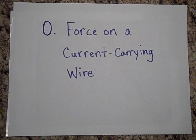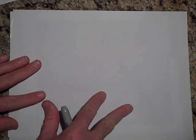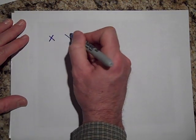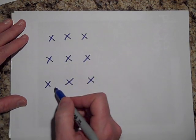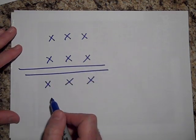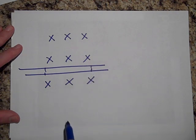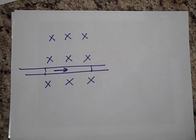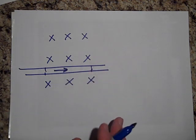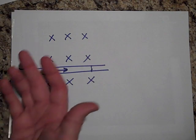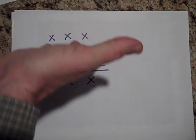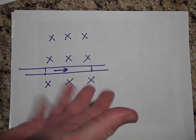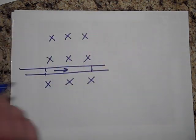I'd like to tell you about the force on a current-carrying wire. If you have a magnetic field going into the page and you put a wire in there, the part of the wire that's actually in the field will feel a force. If the current is going this way — current is positive charge — pretend it's positive charge moving this way. Put your thumb in that direction; your fingers go into the page, so the force is upward.